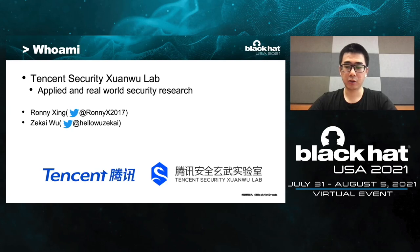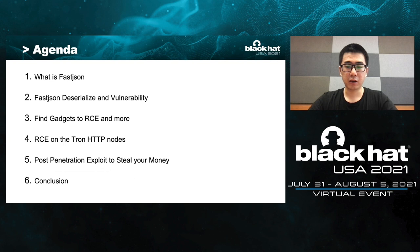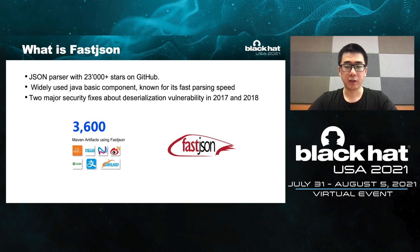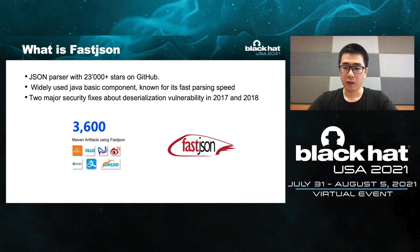Our Xiong Lab has produced many outstanding achievements. Here is the outline of our talk. First, I will introduce FastJSON briefly. FastJSON is a widely-used open source JSON parser with 23,000 stars on GitHub, known for fast parsing speed. There are 3,600 artifacts using FastJSON on Maven. As a basic module of countless Java web services, it serves hundreds of millions of users.